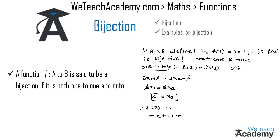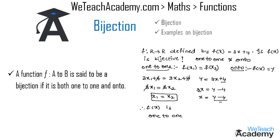If f(x) is onto then it must satisfy the condition f(x) = y. So let us consider y = 3x + 4. Transferring 4 to the other side we get 3x = y − 4, and transferring 3 to the right-hand side we get x = (y − 4) / 3.